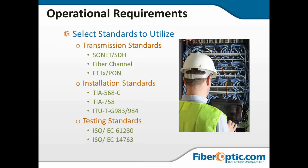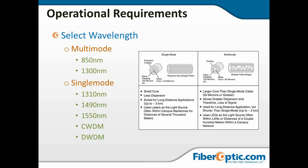Then we select a wavelength, which determines how far and how fast we can go. For multi-mode at short distances, such as inside a building, we work at 850 or 1300 nm. With single mode, we use traditional 1310 and 1550 nm. For fiber to the home, downstream is 1490 nm. We also need to consider CWDM or DWDM — coarse or dense wavelength division multiplexing — which uses single-mode discrete lambdas or specific wavelengths.